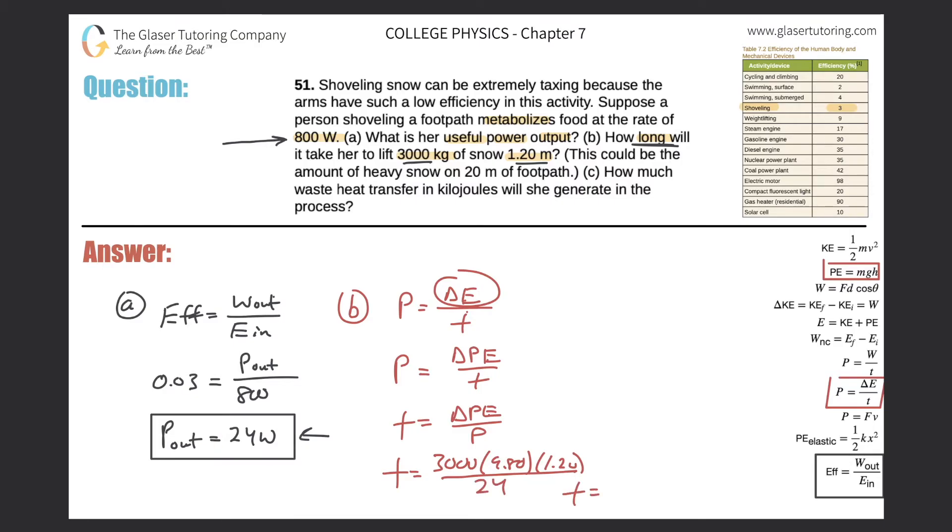So now I can easily calculate the time it's going to take: 3,000 times 9.8 times 1.2, all divided by 24. So this works out to be 1,470, and that'll be in terms of seconds. That's the time that gets spit out of that equation when we use joules and watts. That takes care of letter B.